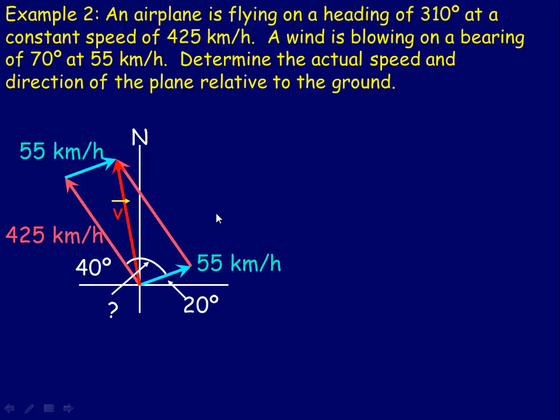So in order to find that, we're going to first find this angle here. And that angle there, we can break it into this angle right here that the 425 makes with the north, and then the angle that the north makes with the blue vector here. So if this is 40, then this would have to be 50. And so we're going to add to that the size of this angle from the north down to here, and that angle is 70. We're actually given that in the problem. So if we add 50 and 70, that's 120. So this angle right in here is 120.